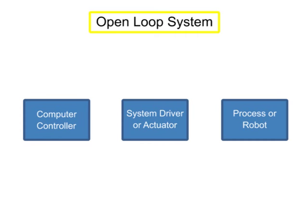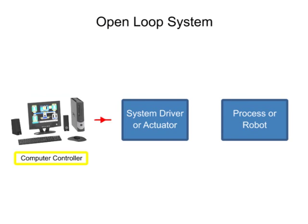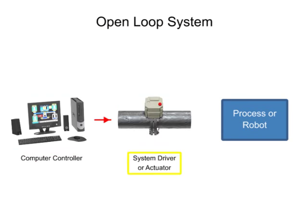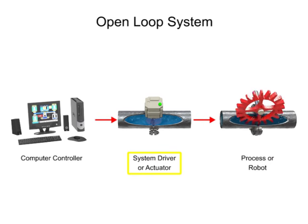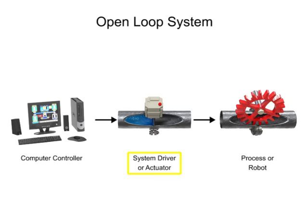In open-loop control systems, signals are first sent by a computer controller to the system driver. The system driver then converts those signals into an operation for the process or robot to perform. The system driver can be anything from a pneumatic actuator, a hydraulic flow valve, or an electrical controller.